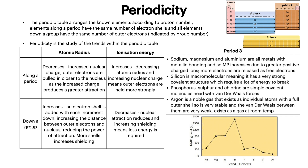So here I've just created a little table for atomic radius and ionisation energy — how these trend along a period and down a group. So firstly, looking at atomic radius. This decreases along a period, so going horizontally across the periodic table, due to increased nuclear charge. The outer electrons are pulled in closer to the nucleus as the increased charge produces a greater attraction. Then down the group, atomic radius increases — an electron shell is added with each increment down, increasing the distance between outer electrons and nucleus, reducing the power of attraction.